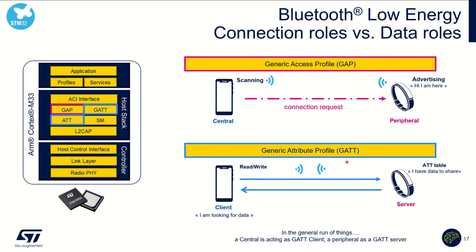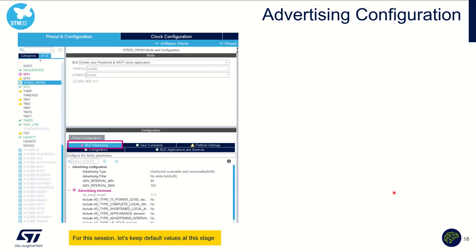At GATT level, this is another angle — it defines how we want to exchange data. There are two main roles: the server and the client. The server is the one having data to share, typically your device. The smartphone is the client, the one looking for data. In general, the central acts as client and the peripheral acts as server.